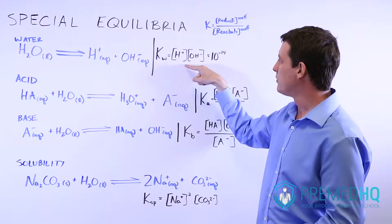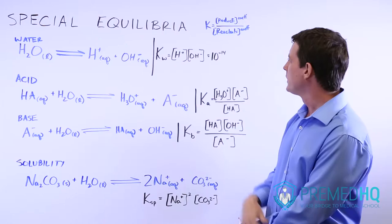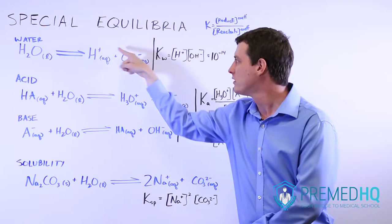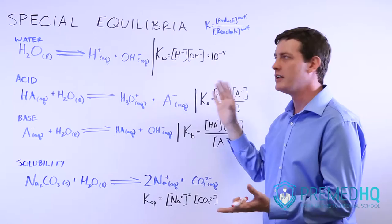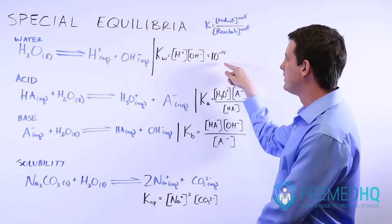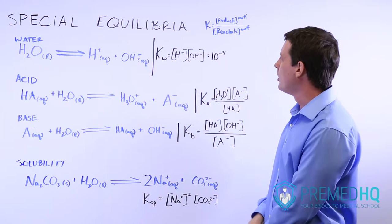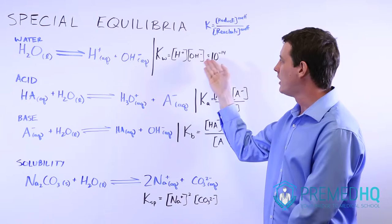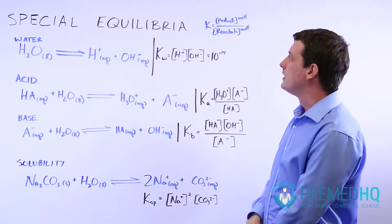KW is the equilibrium of this reaction, and it involves the molarity of the hydronium ions or the protons times the molarity of the hydroxide ions, the OH minus. Because the stoichiometry for both of these is one, we raise them to the first power. KW always equals 10 to the negative 14 — that is an empirically established value. So if you have a lot of protons, you'll have far fewer hydroxide ions. KW is simply the equilibrium expression for water when it dissociates into its two ionic forms.